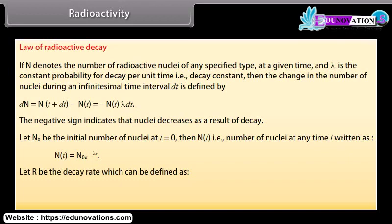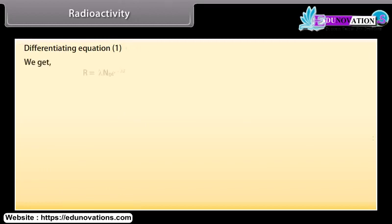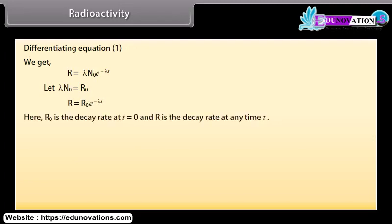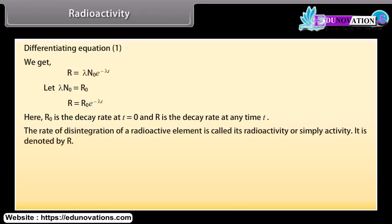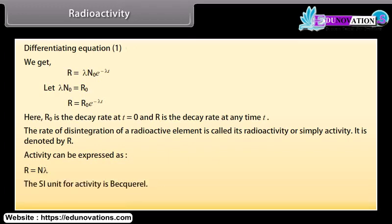Let R be the decay rate defined as R = −dN/dt. Differentiating, we get R = λ·N₀·e^(−λt). Let λ·N₀ = R₀, so R = R₀·e^(−λt), where R₀ is the decay rate at t = 0 and R is the decay rate at any time t. The rate of disintegration of a radioactive element is called its activity, denoted by R. Activity can be expressed as R = N·λ. The SI unit for activity is the becquerel: 1 Bq = 1 decay per second.